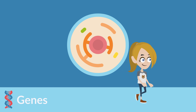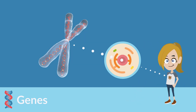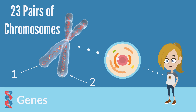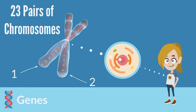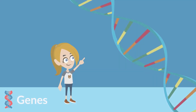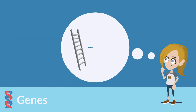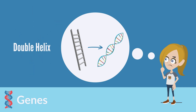The nucleus also houses chromosomes. Sarah, just like you, has 23 pairs of chromosomes. These chromosomes are thread-like structures made up of long strands of DNA, which stands for deoxyribonucleic acid. Think of DNA as a ladder that has been twisted — this shape is called a double helix.